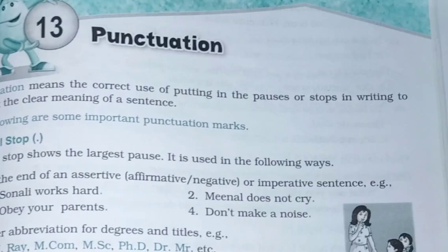So now we are going to start punctuation from the book. This chapter is not that long, it is not that confusing, but it has some small points which are very important — like different punctuation marks which we are going to study in depth. Punctuation means the correct use of putting pauses or stops in writing to present the clear meaning of a sentence. Following are some important punctuation marks.